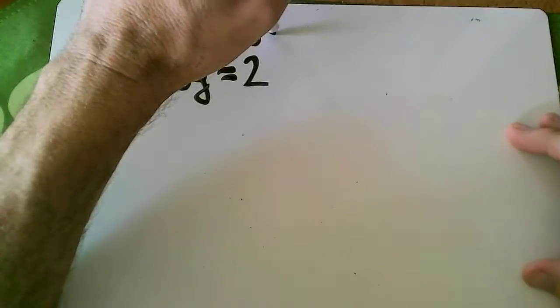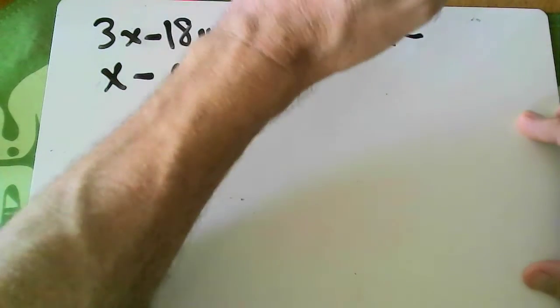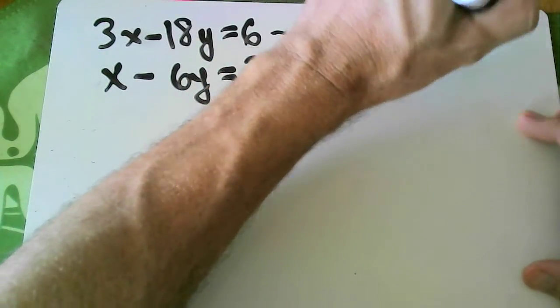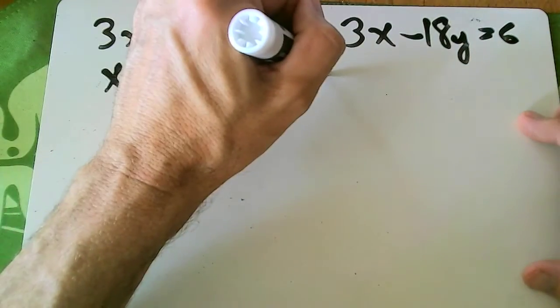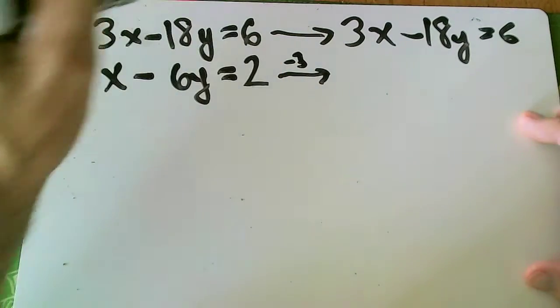So what I'm going to do is I'm going to bring across the top equation and then I'm going to multiply the bottom equation by a negative 3.